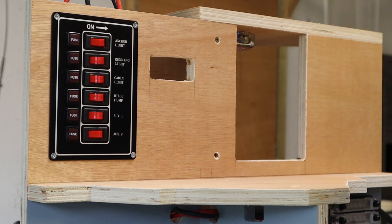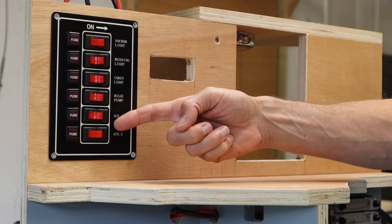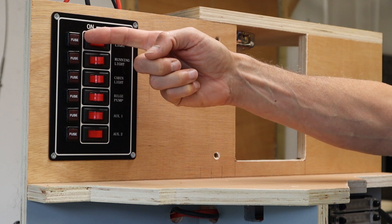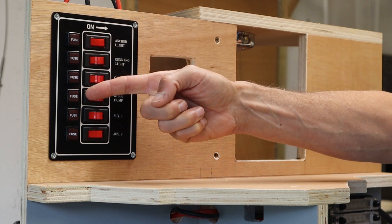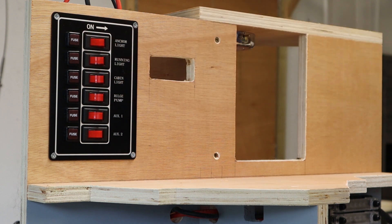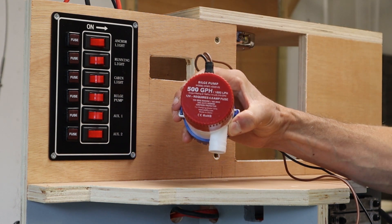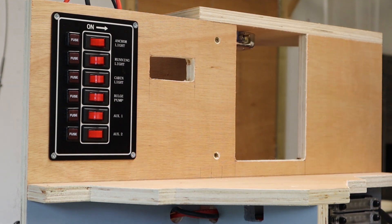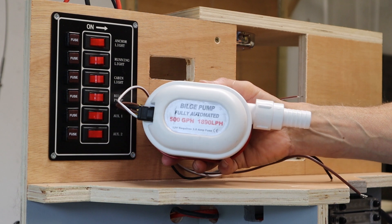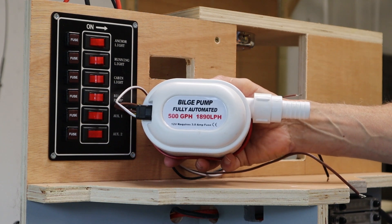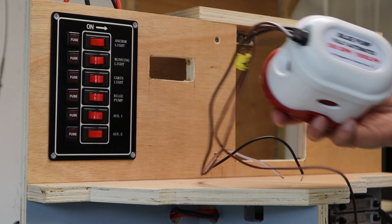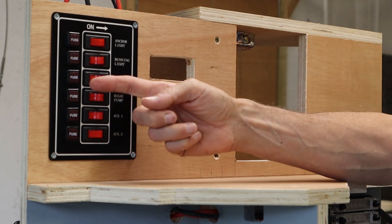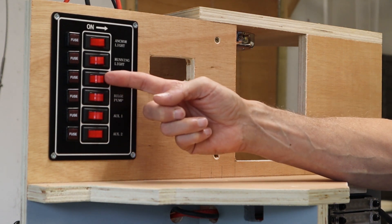We're going to be connecting the bilge pumps up to this switch panel. Each switch comes with a fuse which is a 5 amp fuse so we need to be careful. If we look at this first pump it has a 4 amp rating, and if we look at the other pump it has a 3 amp rating. So 4 plus 3 is 7 amps which is going to be more than any individual one of these switches can handle.